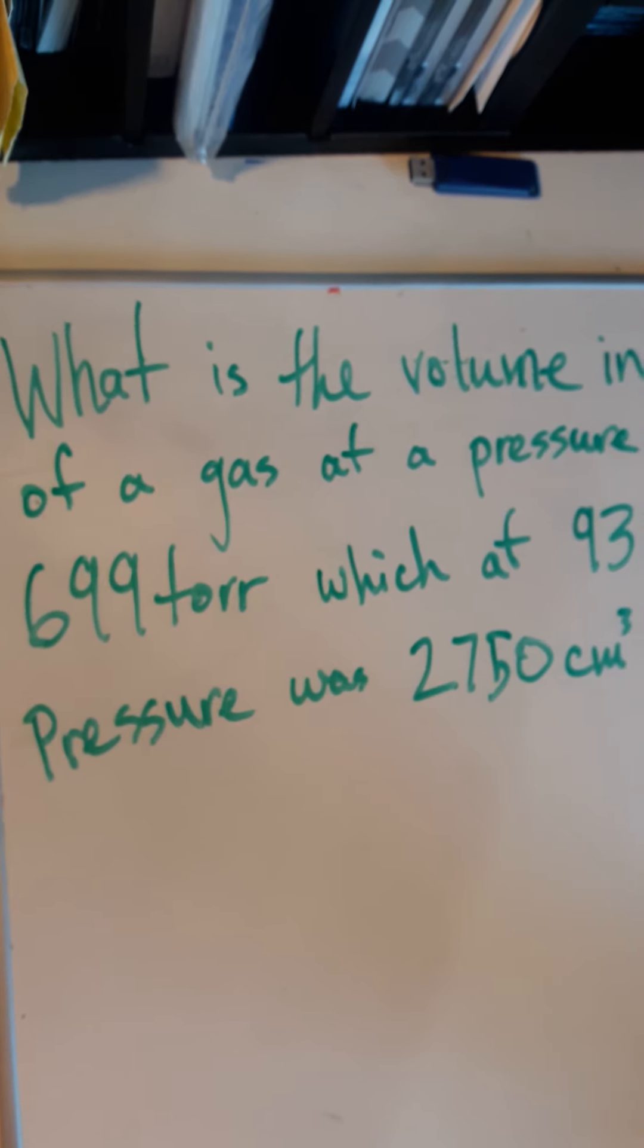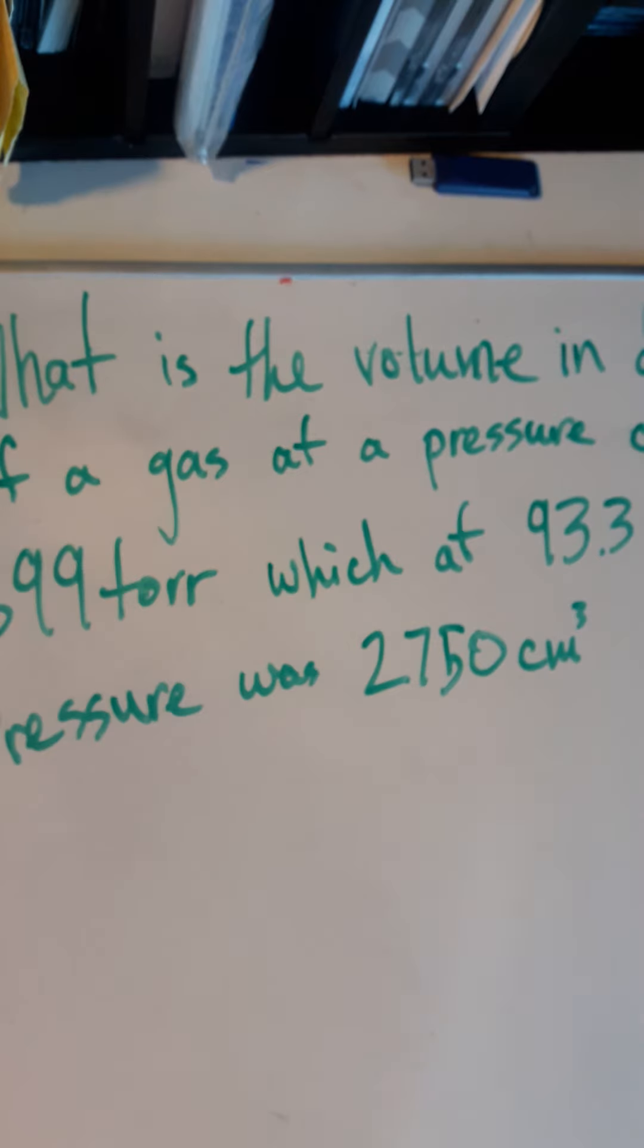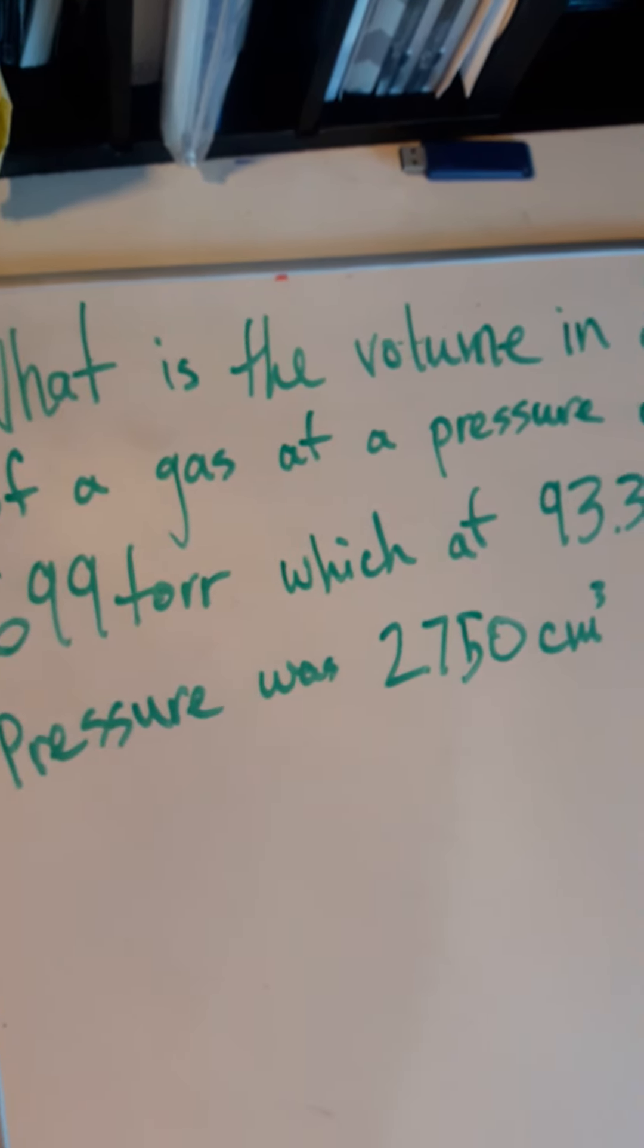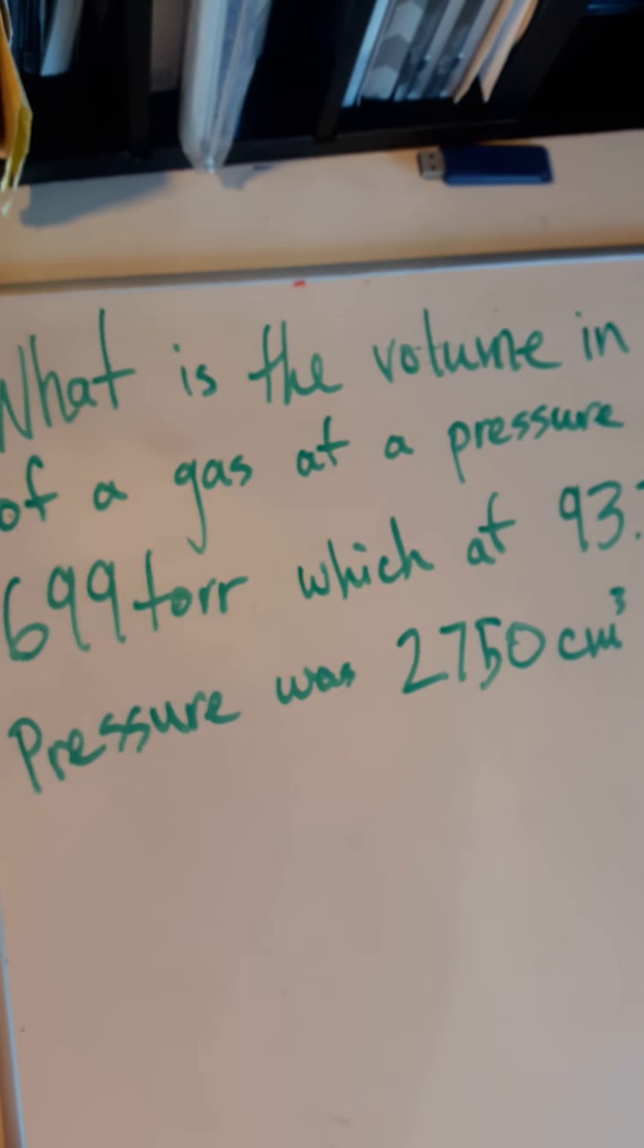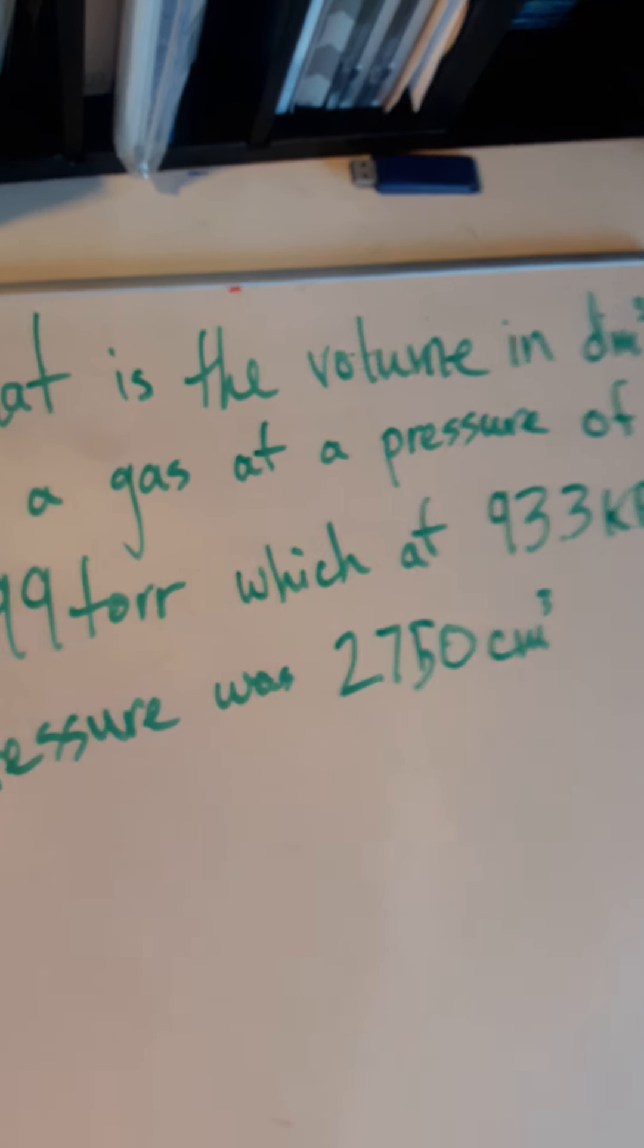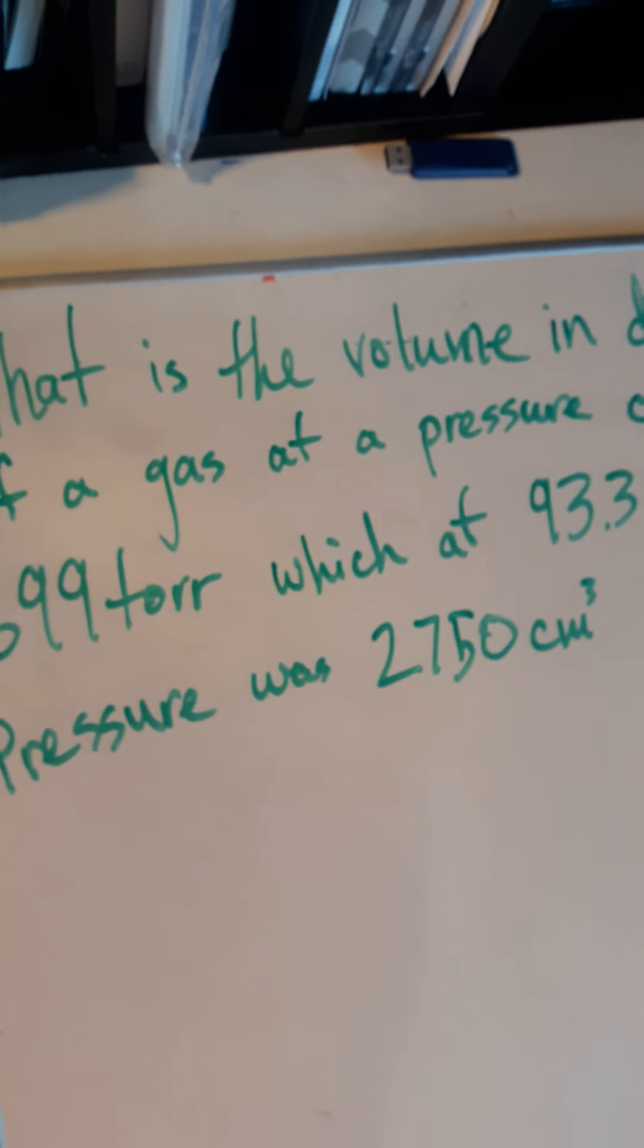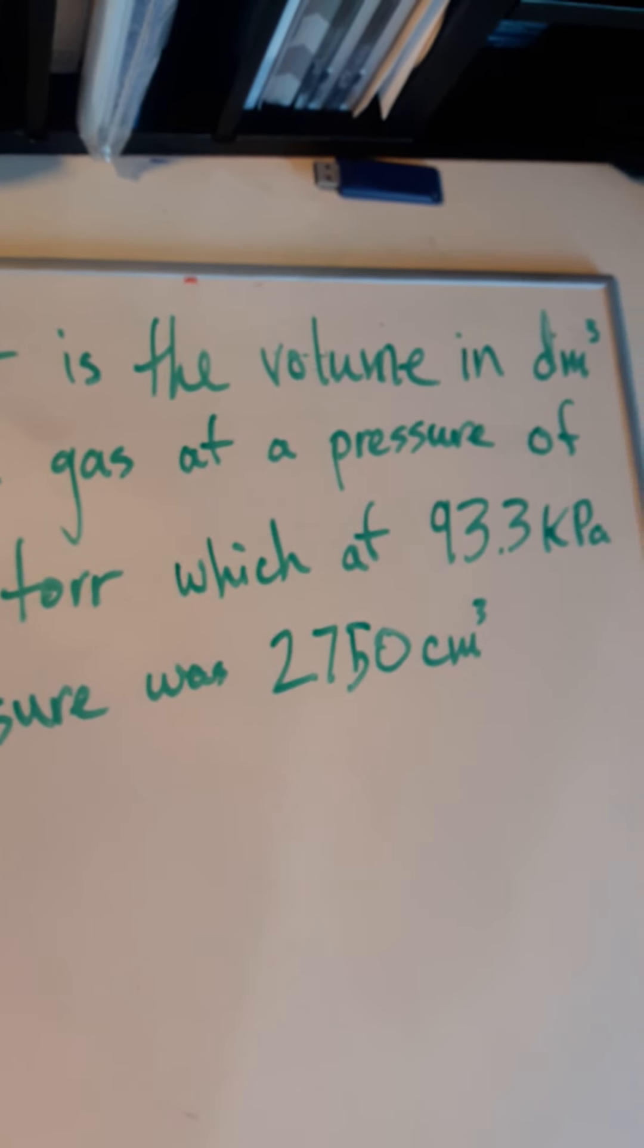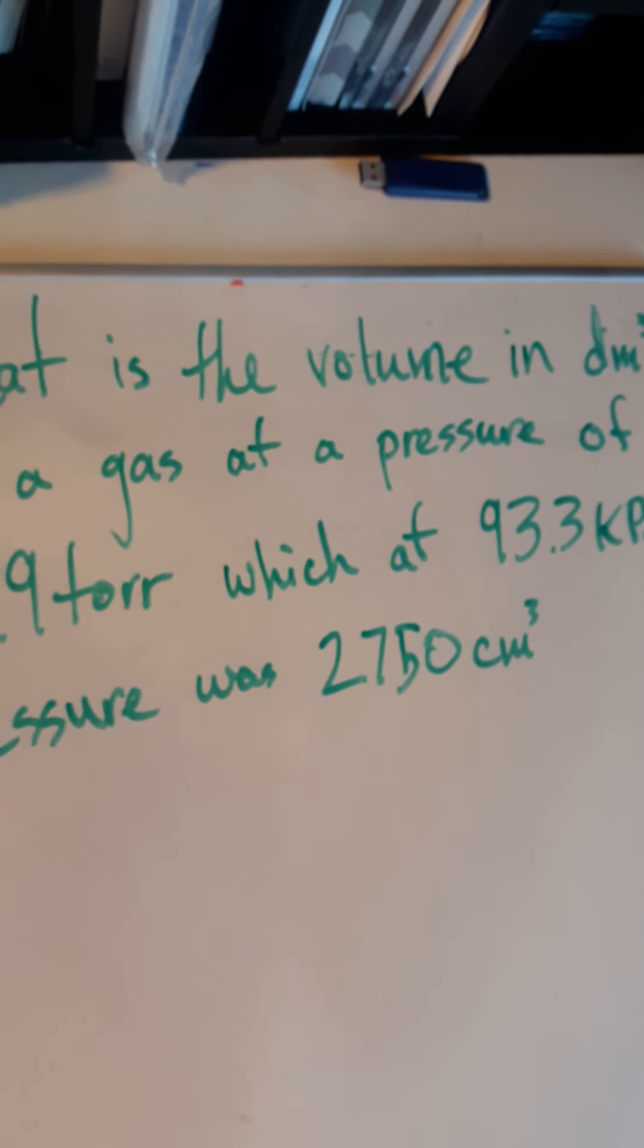What is the volume in decimeters cubed of a gas at a pressure of 699 torr, which at 93.3 kilopascals, pressure was 2,750 centimeters cubed? So there's the problem for you.